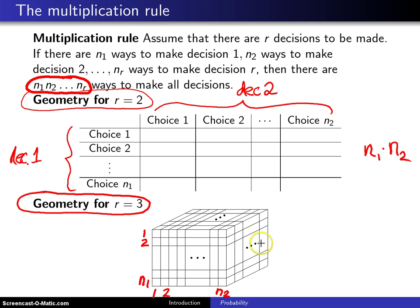And then we go back in a rectangular solid here, and let the layers of that solid be the n3 different ways of making decision 3. We can see each little cube in this rectangular solid is one way of making the decision.